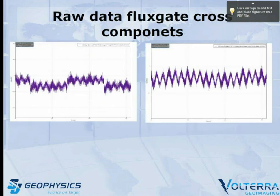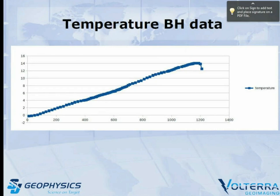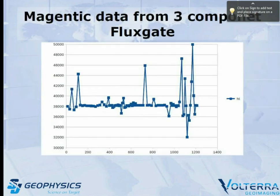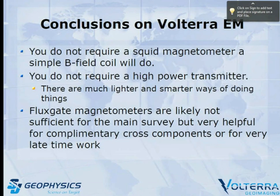Another thing we can collect is temperature, and we can also collect magnetometer data. So I don't think we really need split magnetometers, we don't need high-powered transmitters, and the flux gates are likely only useful as a secondary system for doing a survey, not the primary one.